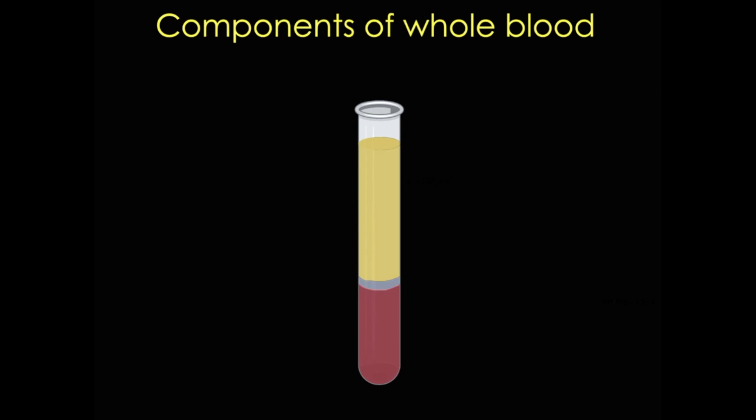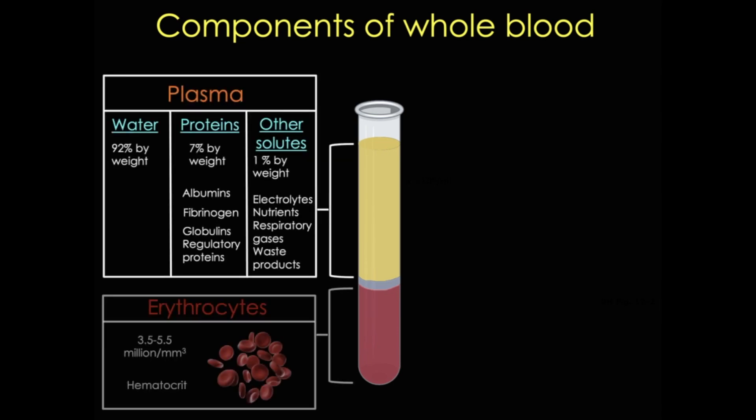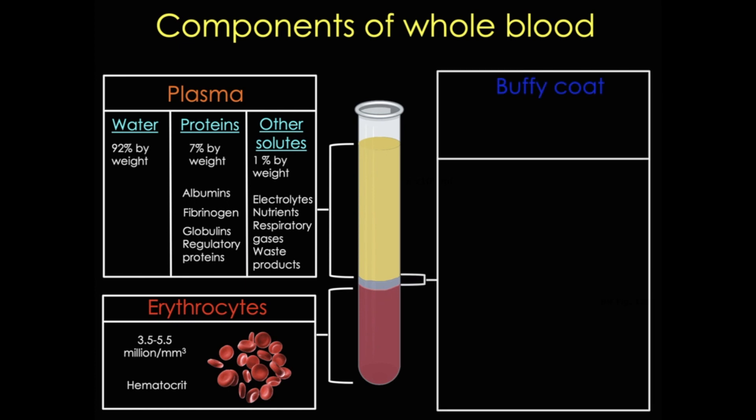This cartoon shows collected blood that's been prevented from clotting and separated into layers by centrifugation. Here you can see all of the components of blood, including plasma and erythrocytes, which I covered in Part 1 of my blood videos. Today I'll continue my discussion of blood, focusing on the components of the middle layer, called the Buffy Coat, which is about 1% of the total volume.